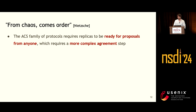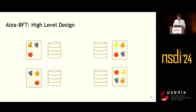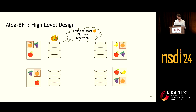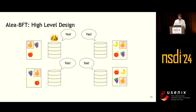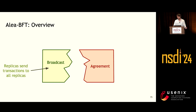To solve this, we bring back a key insight from classical partially synchronous protocols: a per-request designated leader replica responsible for driving the protocol execution for each request. This allows us to have a simpler agreement component. At a high level, we still have the diverging views problem, but the big difference is that in each round we have a designated leader proposing a transaction. Replicas now have a much simpler decision — just vote yes or no based on whether they accept the current leader's proposal. This leader is rotated in a round-robin fashion. For example, the banana might be rejected. More concretely, we have two components running in parallel: a broadcast component that allows replicas to tell each other about transactions, and an agreement component where replicas agree on whether to deliver the current leader's proposal. We need some sort of glue to put these two pieces together.